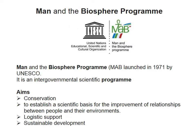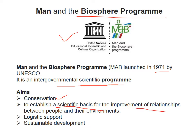MAB, or Man and the Biosphere, is a UNESCO program launched in 1971. It is an intergovernmental scientific program whose main objective is to establish a scientific basis for improving the relationship between people and their environment, promoting sustainable development and logistical support.